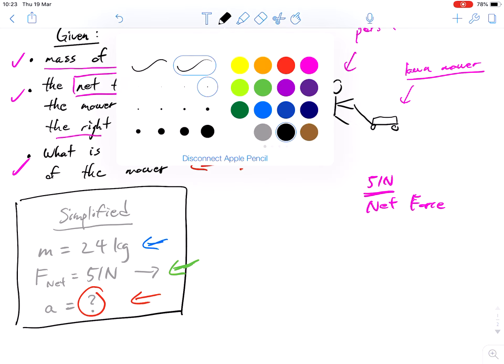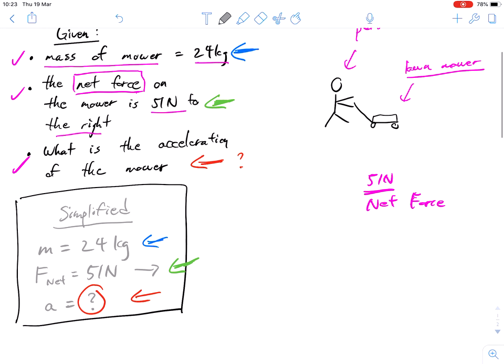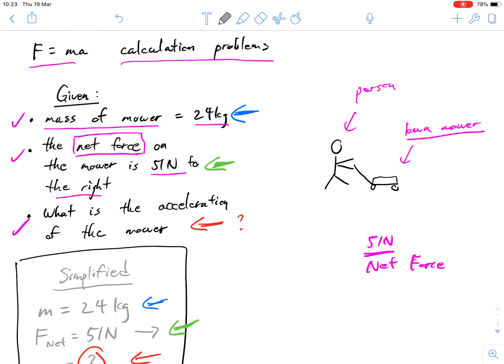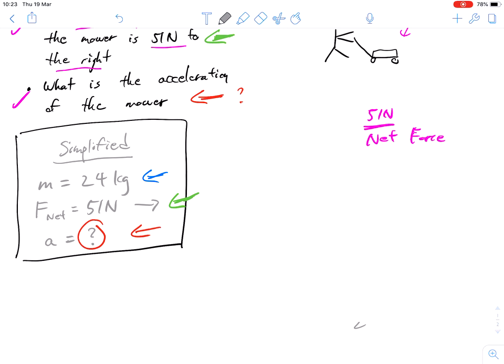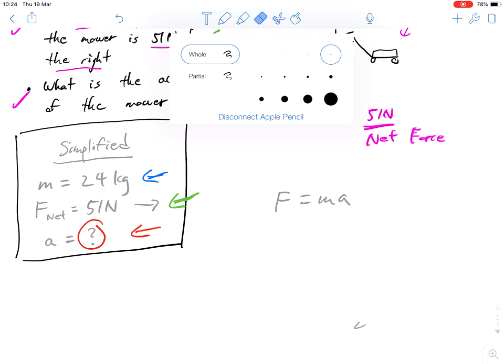So let's get into our calculations. We know we need to use Newton's second law: F equals ma. And we know we've got mass and we got F. So we have this, we've got this, but we don't have that.